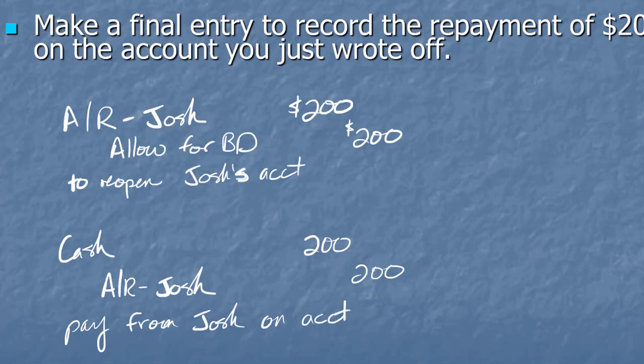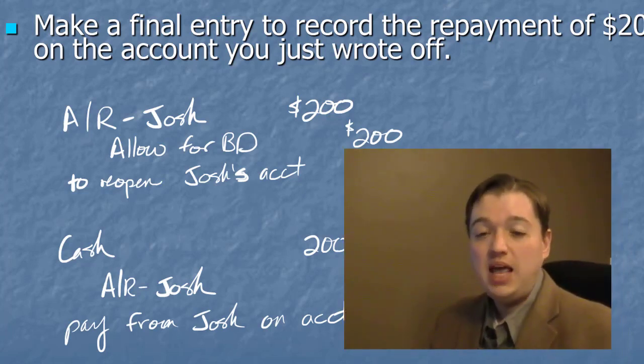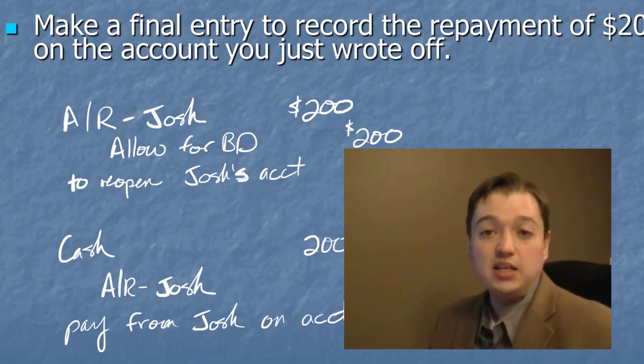So that's how I run an accounts receivable system. Keeping track of the fact that everybody I sell to is not going to pay me. And I have to show the fact that part of the cost of doing business selling on account is being ripped off. And that's what we're doing with this.